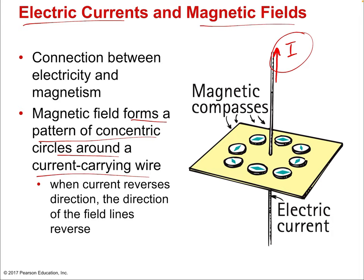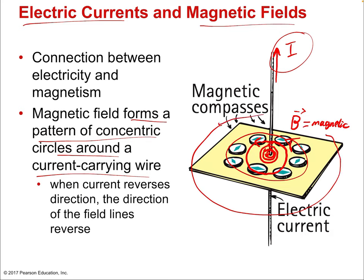The magnetic field is denoted by the letter B, just as the electric field is denoted by E. With a current-carrying wire, we have circular concentric magnetic field lines. As we get closer to the wire, those circles are more closely packed — stronger field. As we get further away, they spread out and become very weak. When the current reverses direction, the direction of the field lines also reverses — so current pointing up gives counterclockwise circles, current pointing down gives clockwise circles.